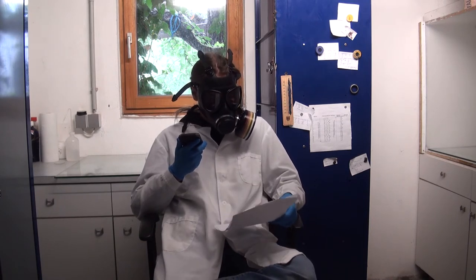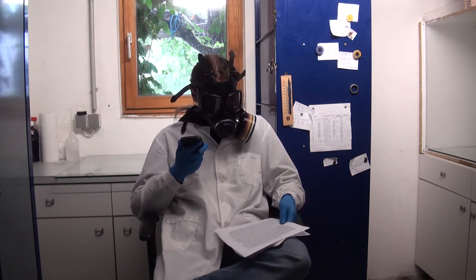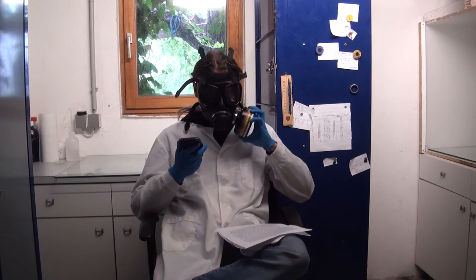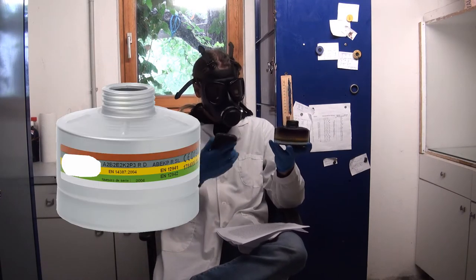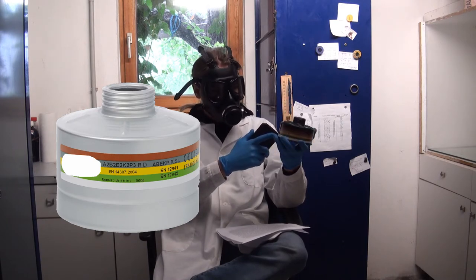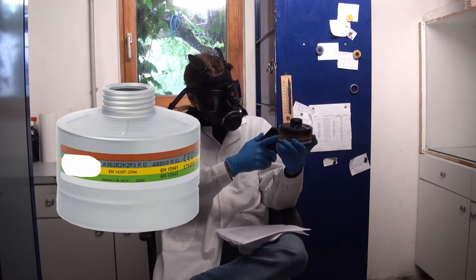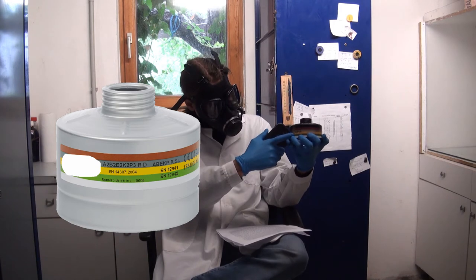Mine is a mixed filter from the German norm. The yellow stripe here, or also here as the E, E2, means that it works against acidic gases like sulfur dioxide or hydrogen chloride.